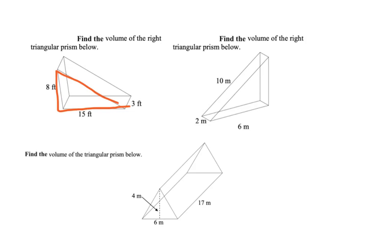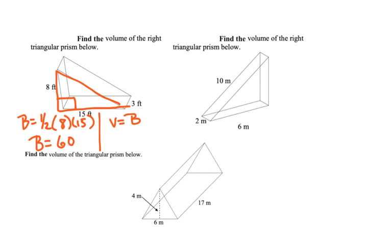Remember in the right triangle, the area of our triangle uses our legs. So we'll start with our base, which is one half, 8 times 15. We put that in our calculator, and our base would be 60. Now remember our volume is capital B times H — the height of our triangular prism. So our volume is our base, which we just found as 60, times the height which is 3. So 60 times 3, our volume would be 180 feet cubed.